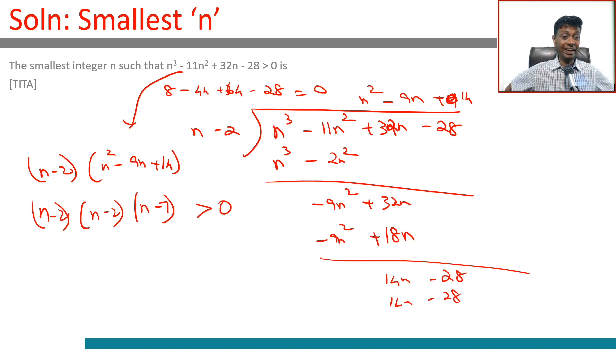When n is greater than 7. When n = 7 it will be equal to 0. When n is between 2 and 7 it will be negative. What happens when n = 1? Very interesting.